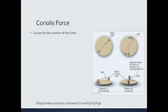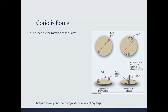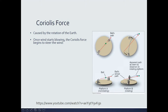The Coriolis force is caused by the rotation of the Earth. Right now, you are on a planet rotating at about 1,000 miles per hour at the equator, and slower the further you get from the equator. Because of this constant rotation and the difference in rotation from the equator to other regions, a deflection occurs — and this deflection is called the Coriolis force.